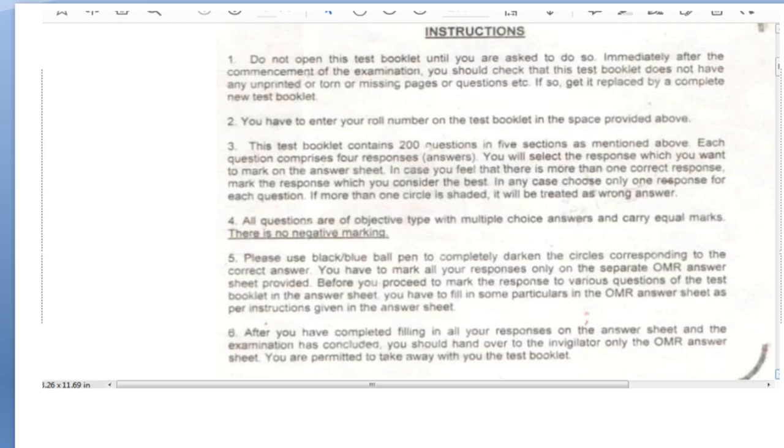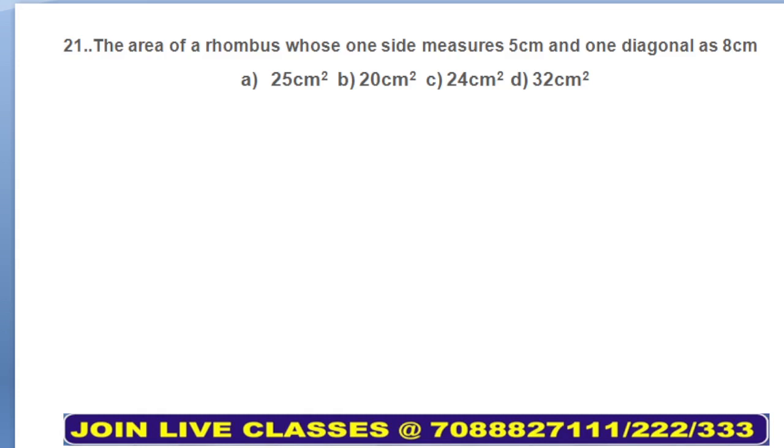Coming back to our class today, this will be our first question. You have to solve it yourself. Just try to solve it. What is the question? The area of a rhombus whose one side measures 5 centimeters and one diagonal is 8 centimeters. Let me draw the figure for you. This is a rhombus, this is 5 centimeters, this is the diagonal which is 8 centimeters. This is named A, B, C, and D.